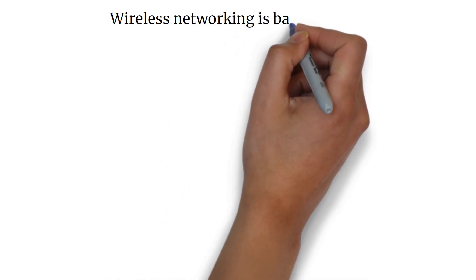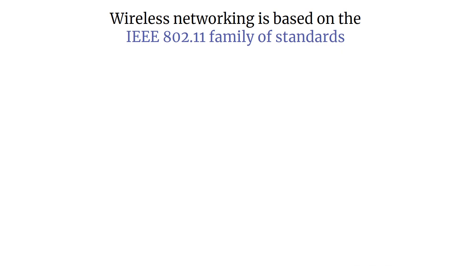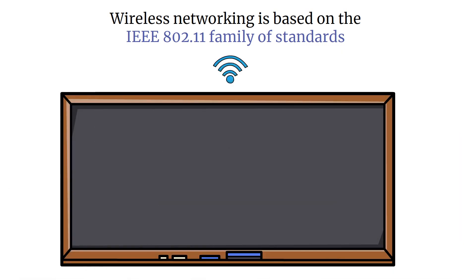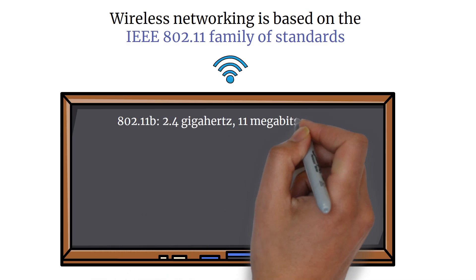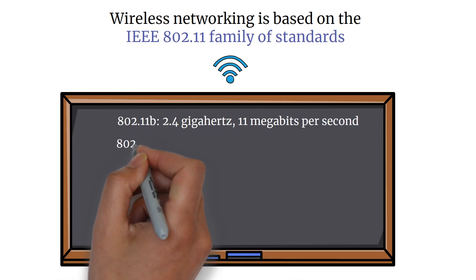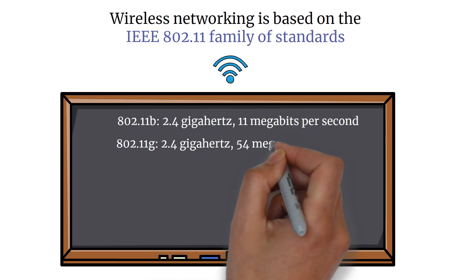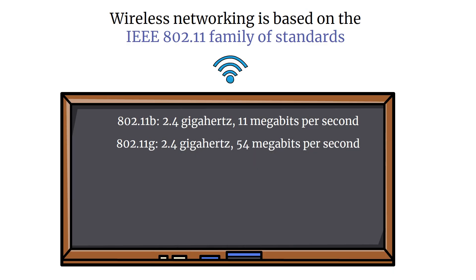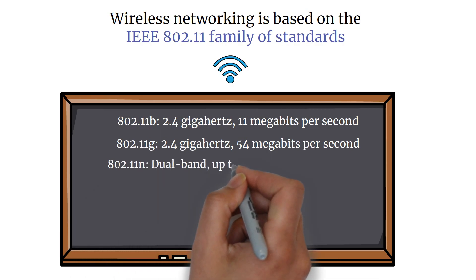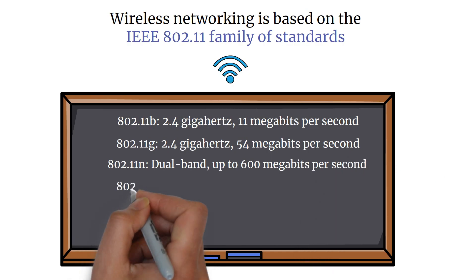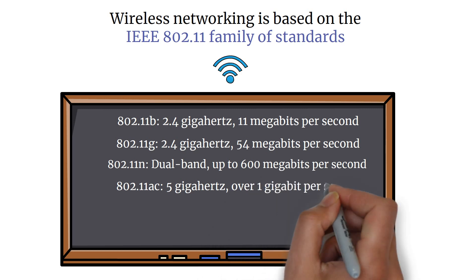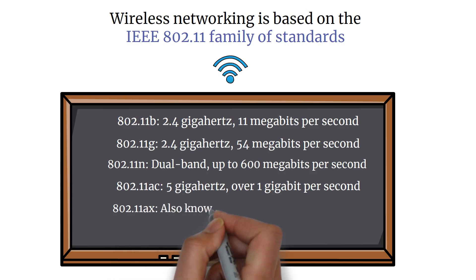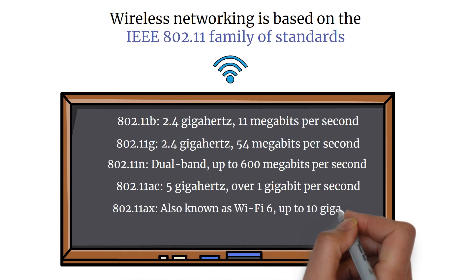Wireless networking is based on the IEEE 802.11 family of standards. Each version improves speed, range, and performance. Key standards include: 802.11b at 2.4 GHz with 11 Mbps; 802.11g at 2.4 GHz with 54 Mbps; 802.11n dual-band with up to 600 Mbps; 802.11ac at 5 GHz with over 1 Gbps; and 802.11ax, also known as Wi-Fi 6, with up to 10 Gbps.